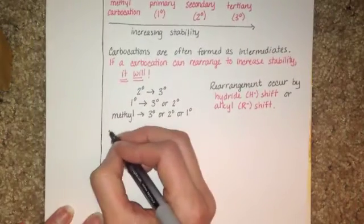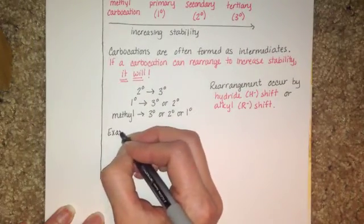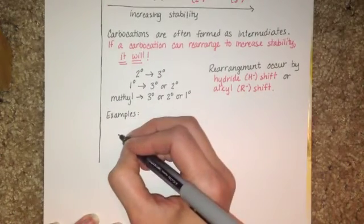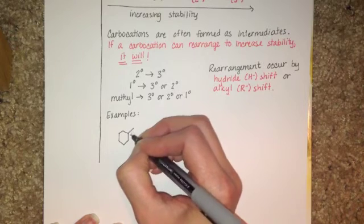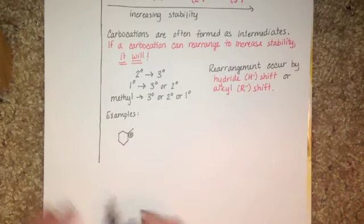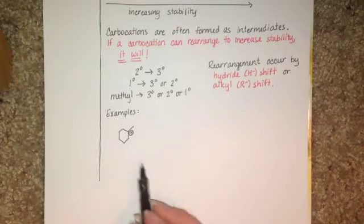Here are some examples. Whenever you look at a carbocation, whenever you're given a structure of a carbocation, you always want to ask yourselves, what is that carbocation? And can it rearrange? For this particular first example, you see this carbon atom is the carbocation in question.